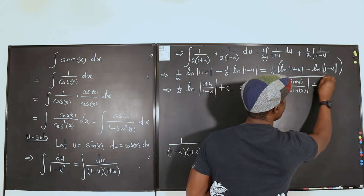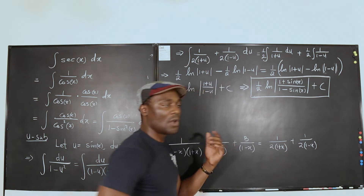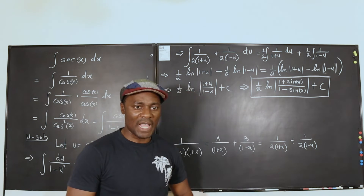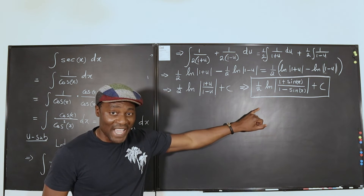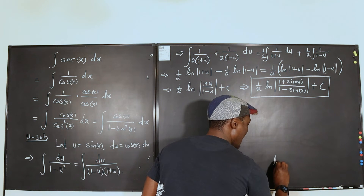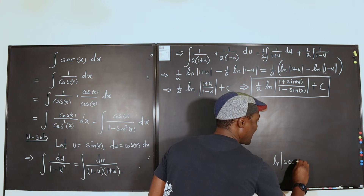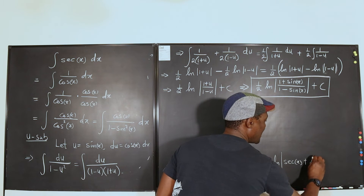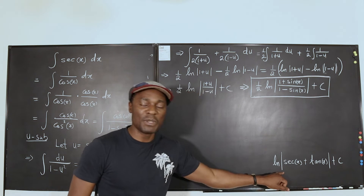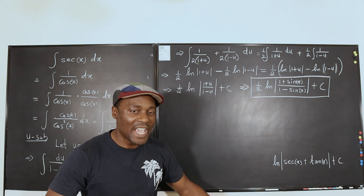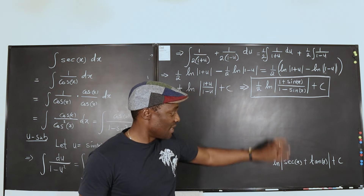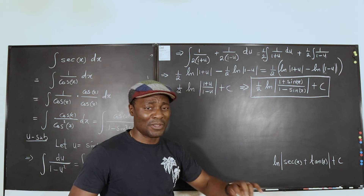This is one of the answers you will see in textbooks or other presentations. But this is not the most common answer. The most common answer you will get looks like this: it is the natural log of the absolute value of secant x plus tangent x, plus C. This is what most people use, and in most cases it is most relevant because the other form doesn't really look pretty. There's another way you can get this by doing some smart substitution.